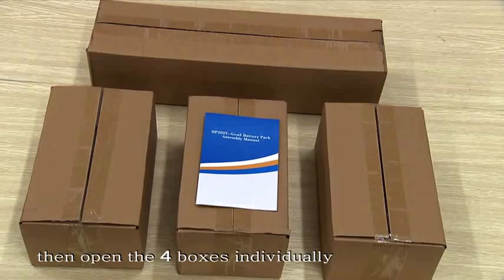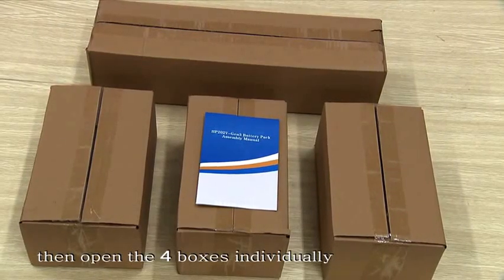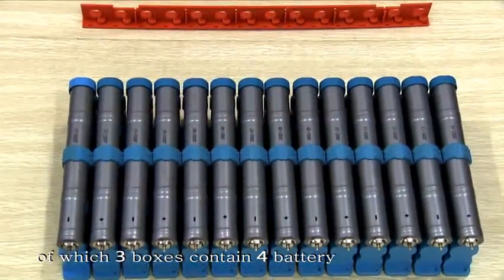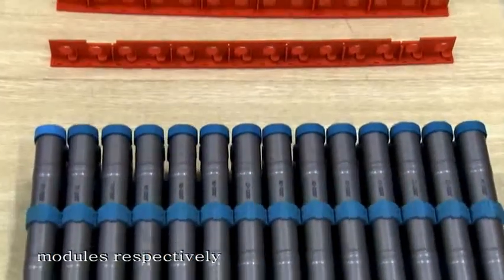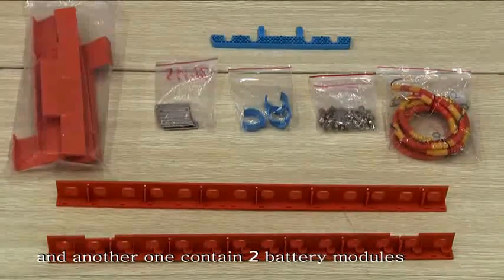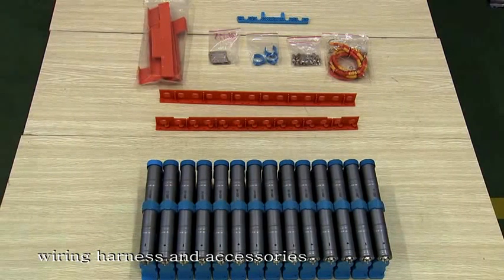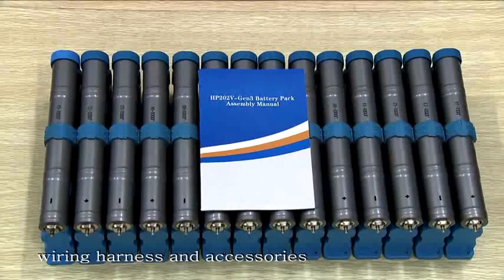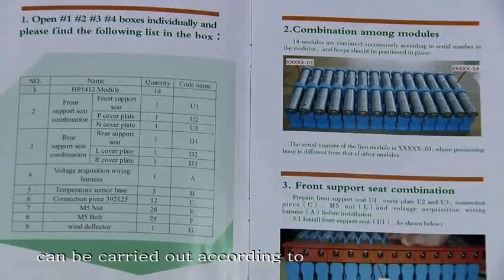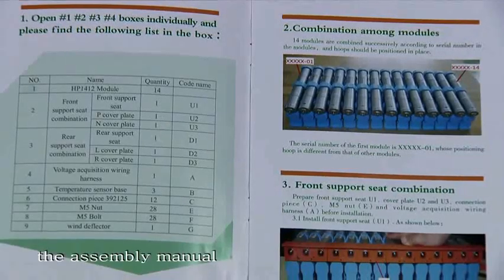Then open the four boxes individually. Three boxes contain four battery modules respectively, and another one contains two battery modules, wiring harness and accessories. All the following installation steps can be carried out according to the assembly manual.